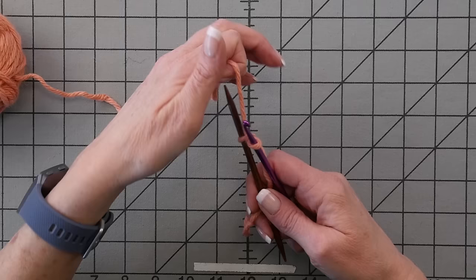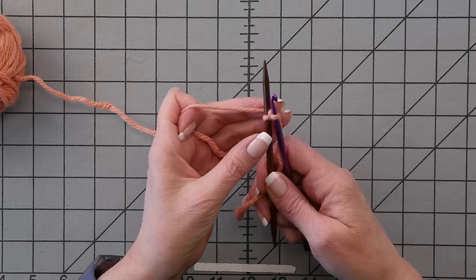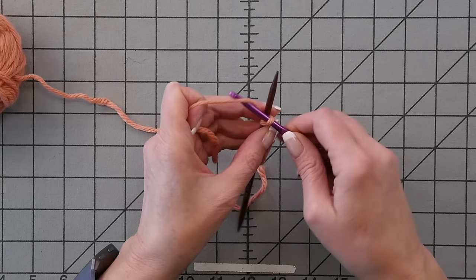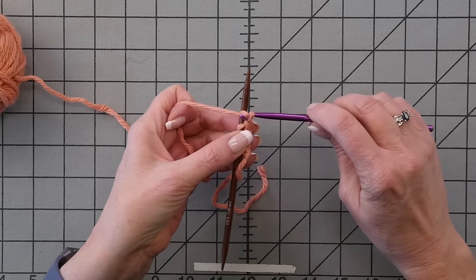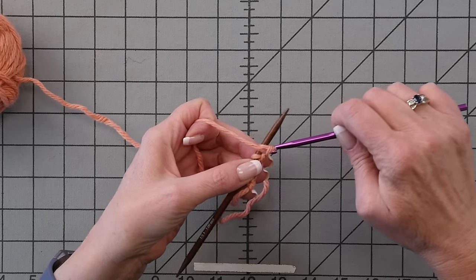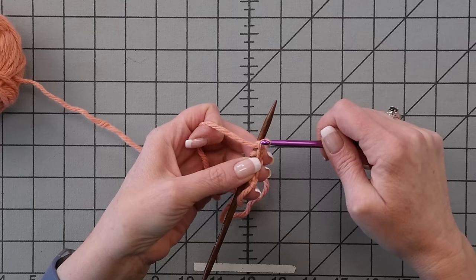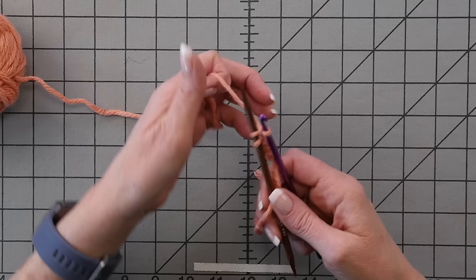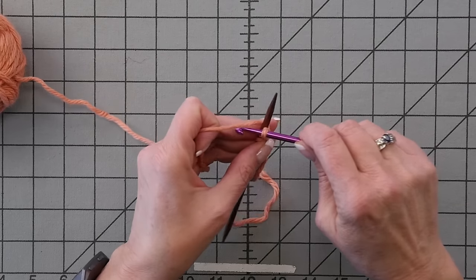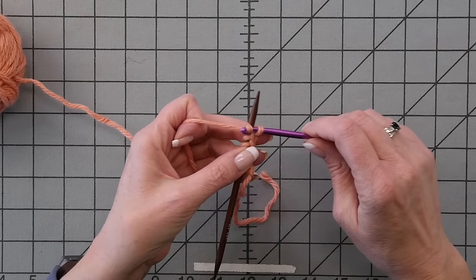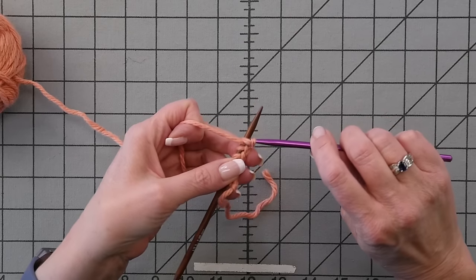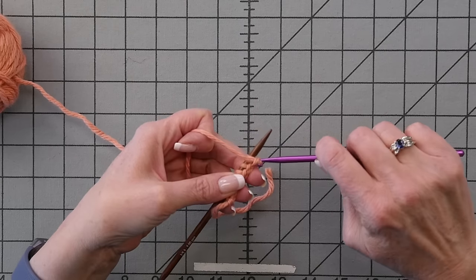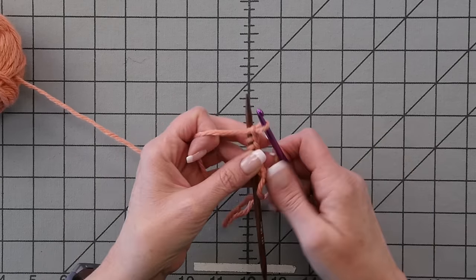Pull the yarn back behind the needle, reach the crochet hook over, grab the yarn, and pull it through. Every time you're gonna put the working yarn back behind the needle, reach over, pull the yarn through the loop on the crochet hook.